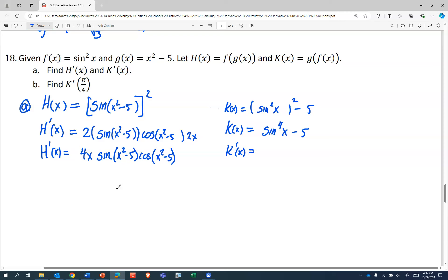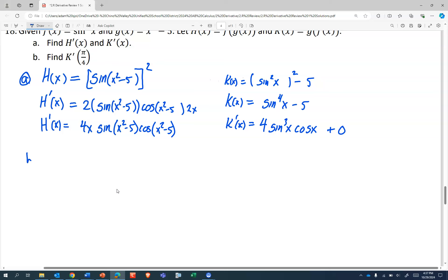In this case, I think I will expand, because that sin to the fourth is just going to allow me to not have to do a chain rule. So k'(x), the derivative of something to the fourth is 4 times that same something cubed. That something is sin x, which has a rate of change of cos x. The derivative of 5 is 0.